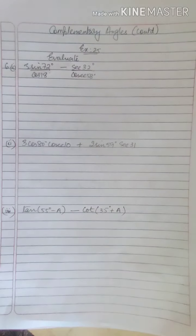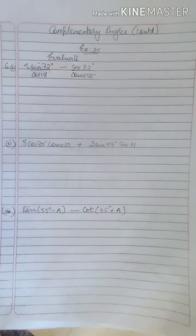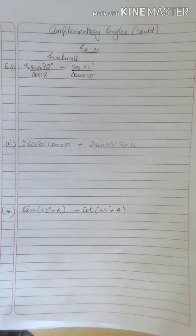Hello students. In this class we will continue with the chapter on complementary angles and hence we will continue with the sums of exercise 25. Now the 6th main: evaluate 3 sin 72 / cos 18 minus secant 32 upon cosecant 58.